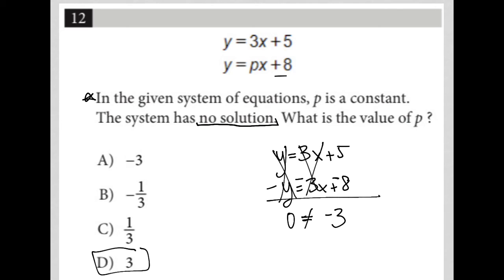Zero does not actually equal negative three. And that's why we have no solution here. So I just proved to you by using the strategy of plugging in answers that three is correct.